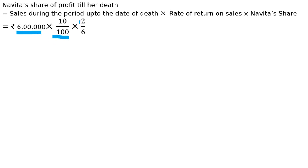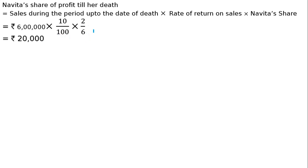Aur Navita ka share — question mein diya rakha hai — 2 by 6. The profit sharing ratio of Dinkar, Navita and Vani is 3:2:1, so Navita's share is 2 by 6. To Navita ko profit milega — that will be Rs 20,000. Yeh hota hai profit.